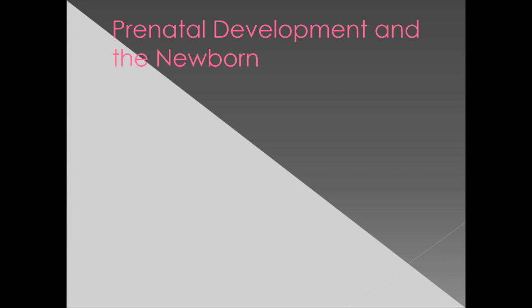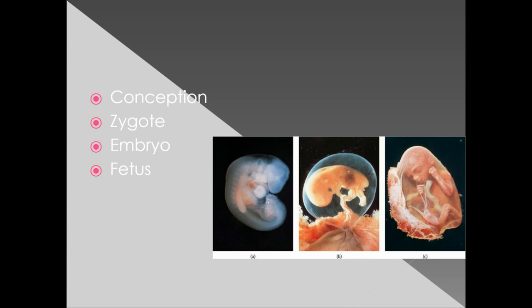The first part will be on prenatal development and the newborn — prenatal meaning before a child is born and the development that takes place within that time. When the sperm of a male fertilizes the egg of a female, that's called conception, and it creates a single-celled organism called a zygote.